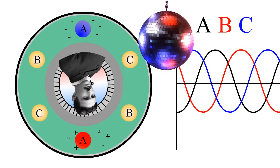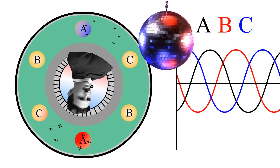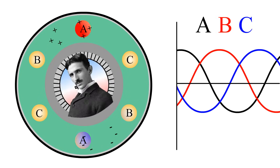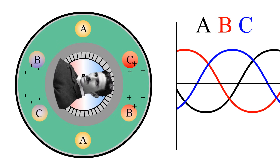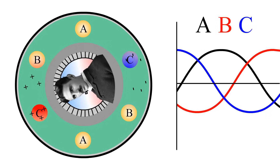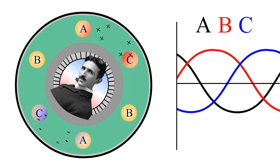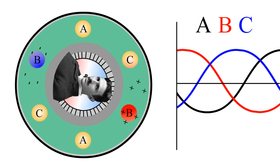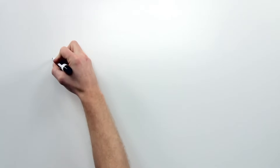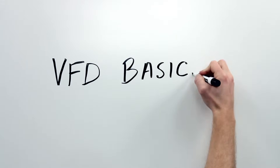Our buddy Nick Tesla is starting to get dizzy. So how do we slow down the motor? If we can stretch out those sine waves so that less of them are entering the motor per second, thus lowering the frequency of the power, then the magnetic field will spin slower. Since the utility is always pumping out 60 Hz, let's see if we can change that frequency.